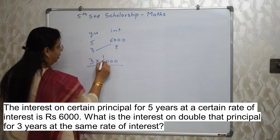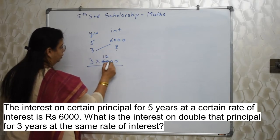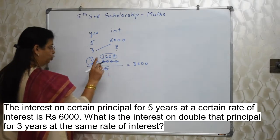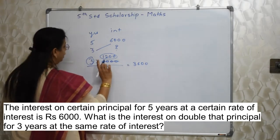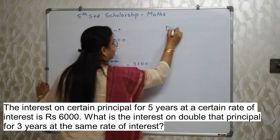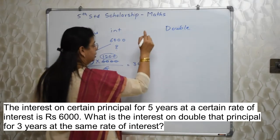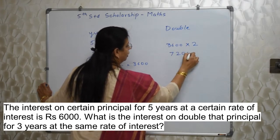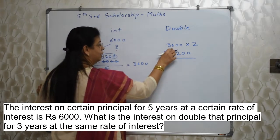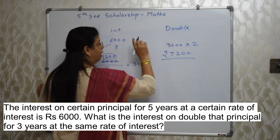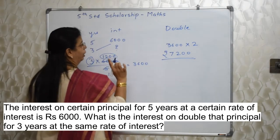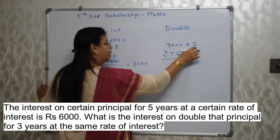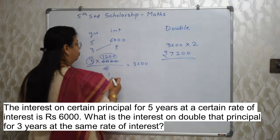This answer of 3600 will be there as an option — 100% — but please don't take that. As I told you earlier, the word 'double' is very important. Double means we multiply 3600 by 2. So the answer is Rs. 7200. If you ignore the word 'double,' 2 marks gone, even though you have done everything else properly. Please be careful. If it had been 'half,' we would have halved it. If it had been '3 times,' we would have multiplied by 3.